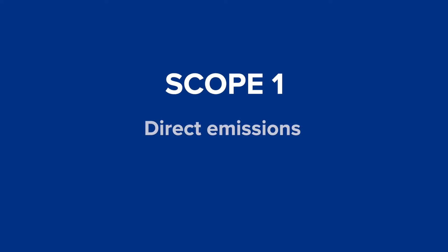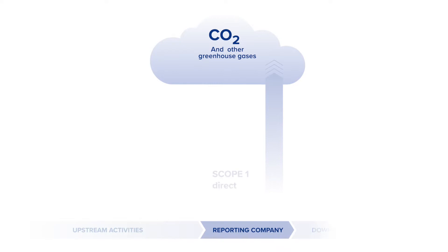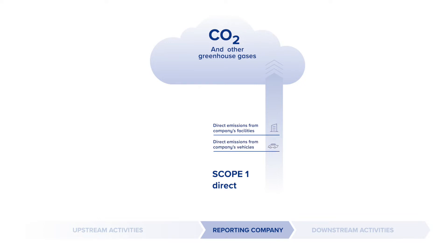Let's begin with Scope 1. It includes direct emissions from a company's owned or controlled sources, such as on-site energy like natural gas and fuels, refrigerants, furnaces, as well as emissions from fleet vehicles. Also included in Scope 1 are process emissions, which are released during on-site manufacturing.